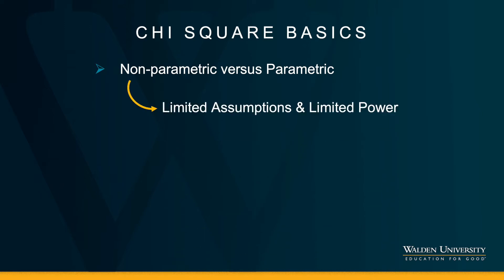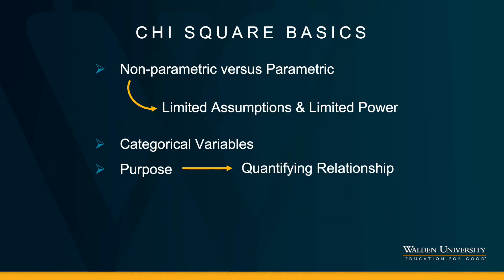A non-parametric test has limited assumptions, but also limited power. If a robust parametric test can fulfill assumptions, it will always have more power than a non-parametric test. The chi-square test requires categorical variables — specifically nominal variables. It is possible you'll be asked to run the chi-square for ordinal variables; there are better fitting tests, but running chi-square on ordinal data is acceptable because ordinal variables still fulfill the nominal nature as well. The purpose of a chi-square is to find a relationship we can quantify by comparing observed values — frequencies — to expected values.